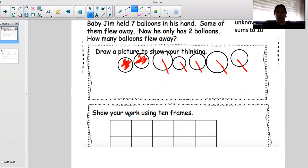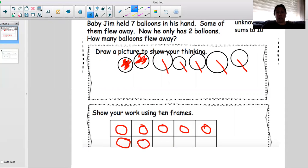Now how do we show this using a tens frame? Well, we want to go in and draw our seven balloons because that's how many we started with. So one, two, three, four, five, six, seven. There were seven balloons.